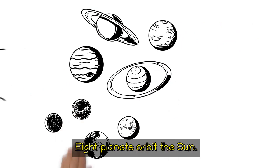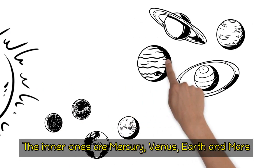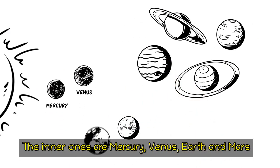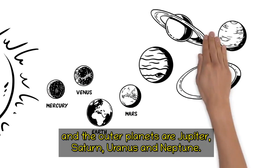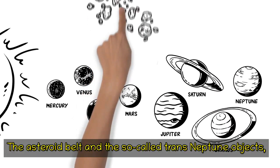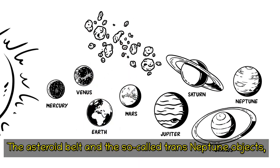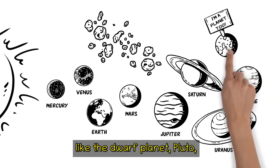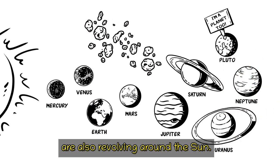Eight planets orbit the Sun. The inner ones are Mercury, Venus, Earth, and Mars. And the outer planets are Jupiter, Saturn, Uranus, and Neptune. The asteroid belt and the so-called trans-Neptune objects, like the dwarf planet Pluto, are also revolving around the Sun.